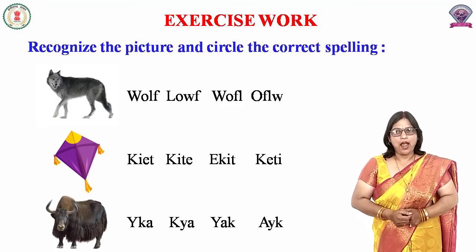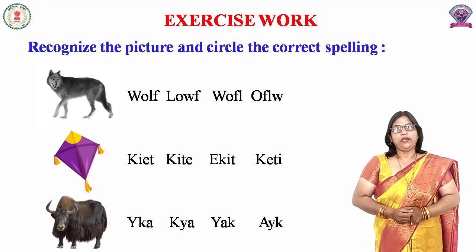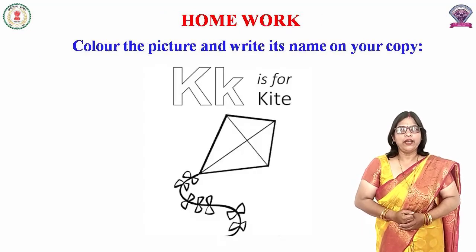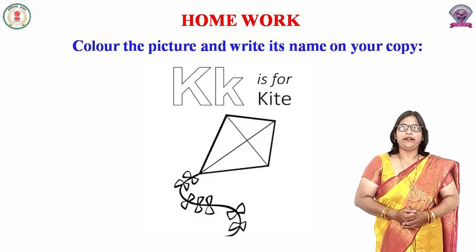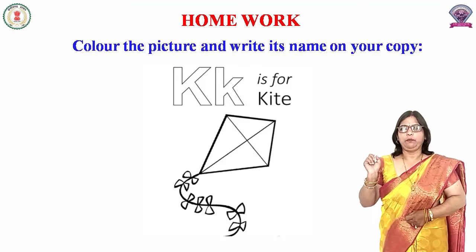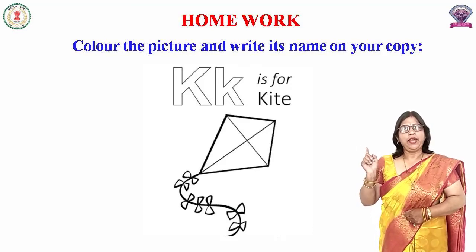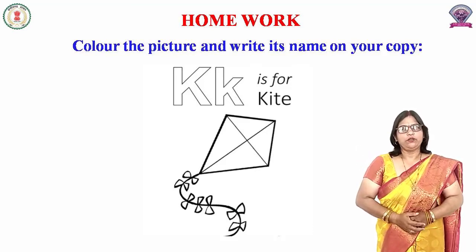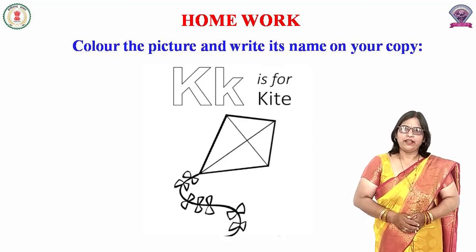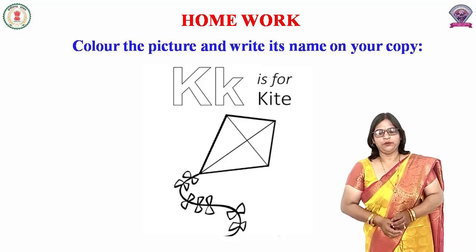उसके आगे kite है, फिर yarn है। अब आपके लिए एक homework है — Color the picture and write its name on your copy. Kite की picture है — K for kite — तो इस kite को सुन्दर सा बनाना है अपनी copy में और इसे color करना है। Thank you.